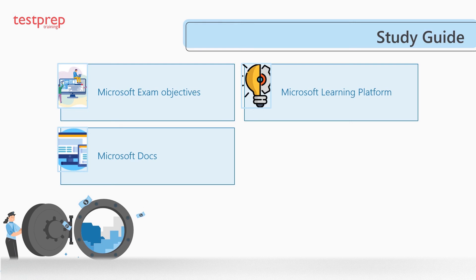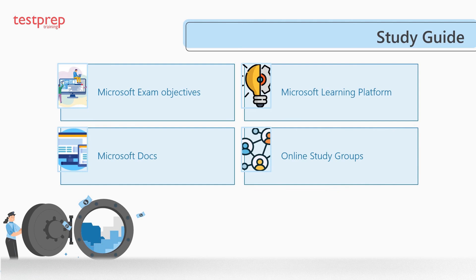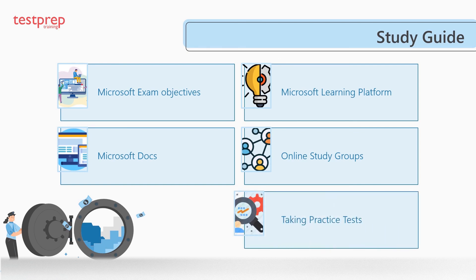Fourth, online study groups: online study groups can benefit candidates during exam preparation by helping them stay connected with experts and professionals in the field. Fifth, taking practice tests: practice tests are important for exam preparation, and using the Microsoft PL-600 practice exam tests will help in identifying weak and strong areas.